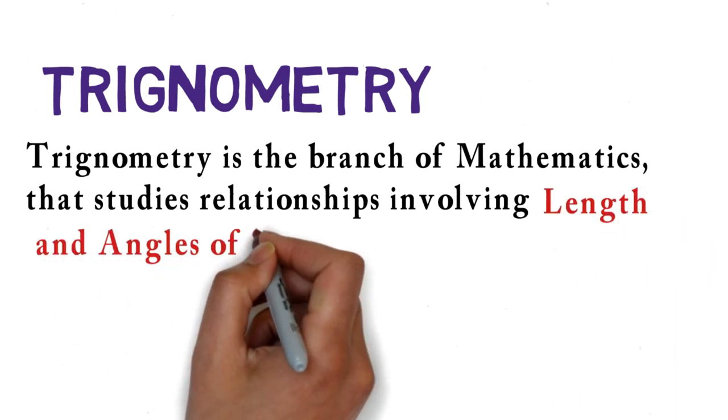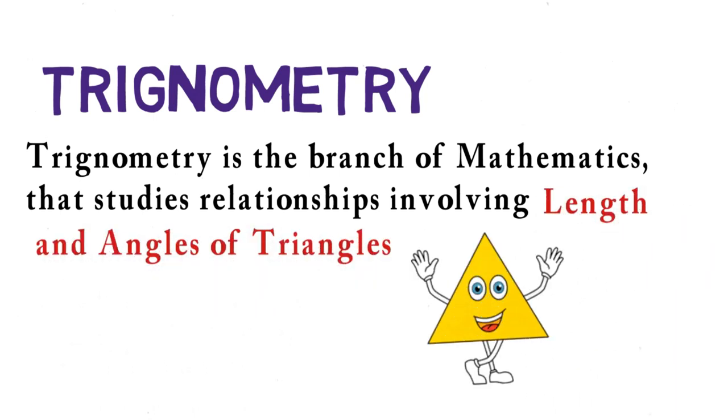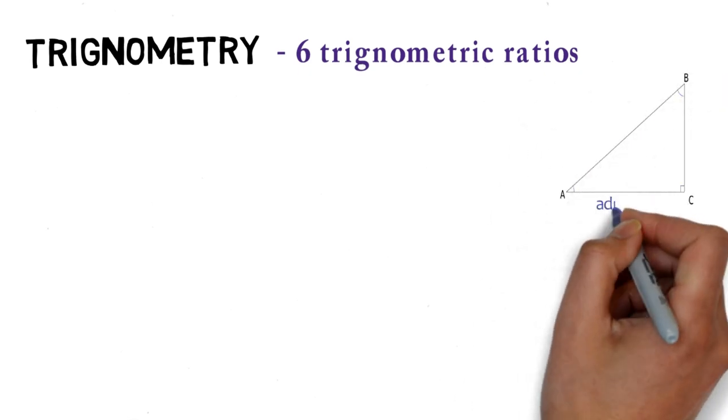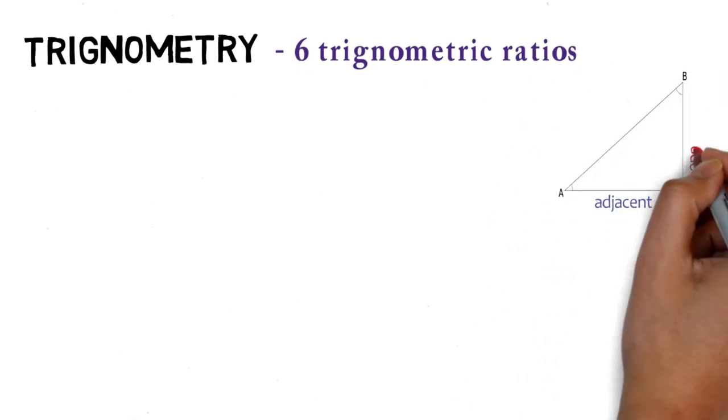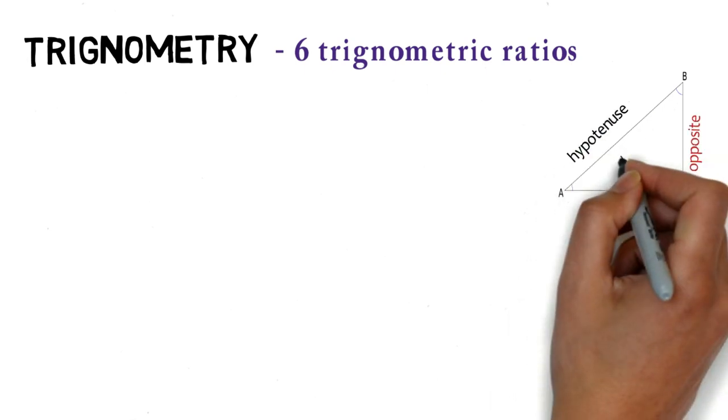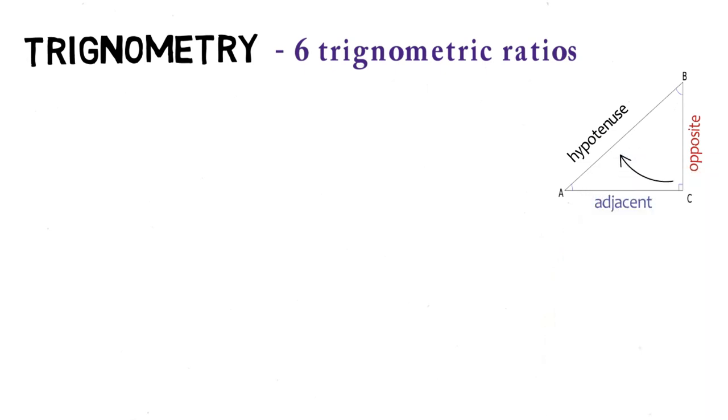Trigonometry uses six functions in relation to right triangles where AC is adjacent, BC is opposite side, and AB is hypotenuse. Hypotenuse is always opposite side of right angle and it's always the longest side of a triangle.